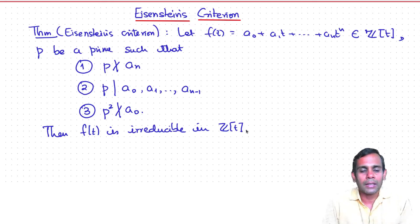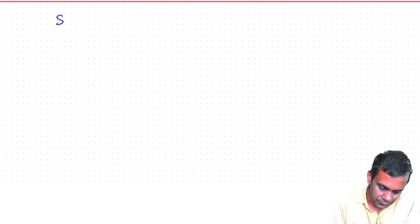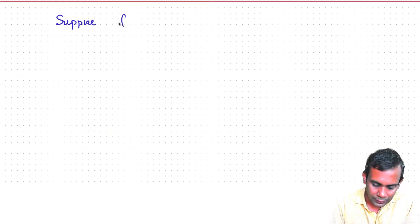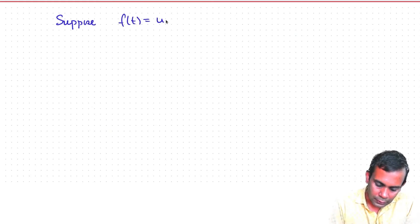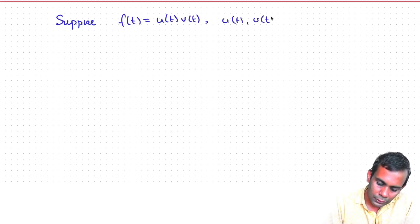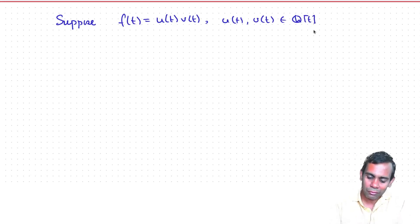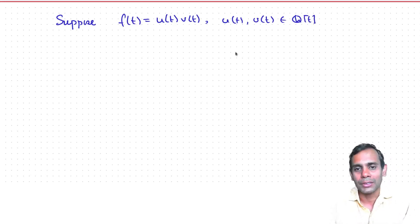Then the theorem says that f(t) is irreducible in ℤ[t]. The proof will use reduction modulo p and proceeds by contradiction. Suppose we have a factorization f(t) = u(t)·v(t), where u(t) and v(t) are in ℚ[t]. To apply reduction modulo p we need integer coefficients, so we fix that by using Gauss's lemma.